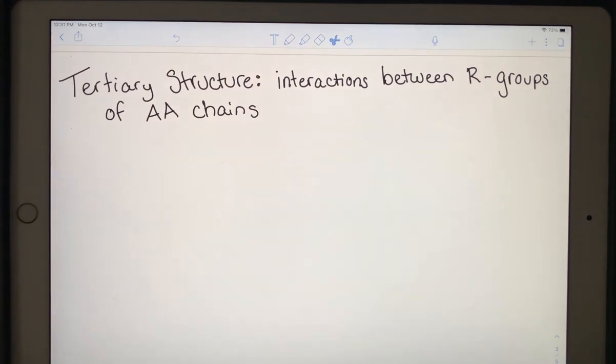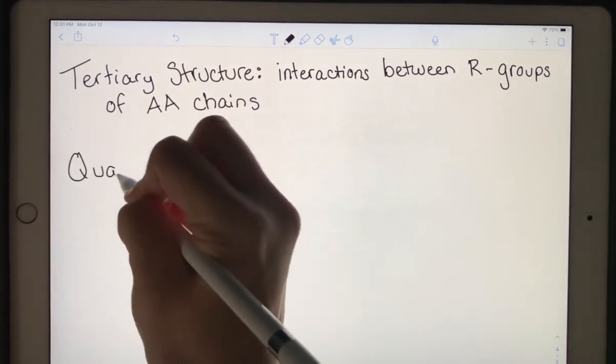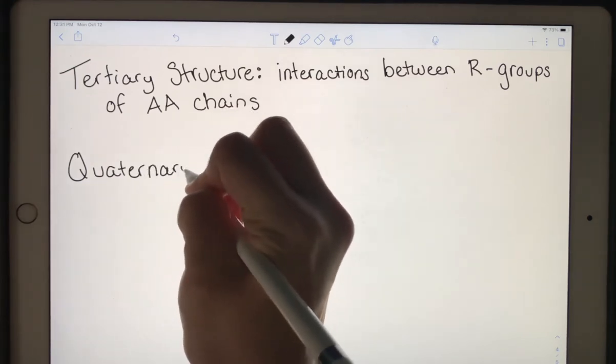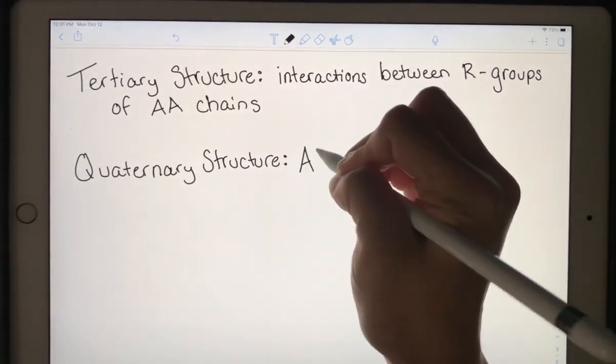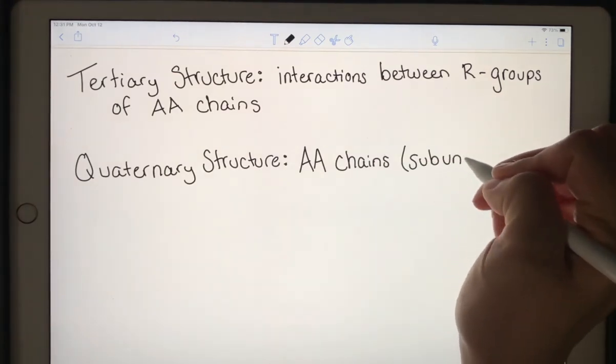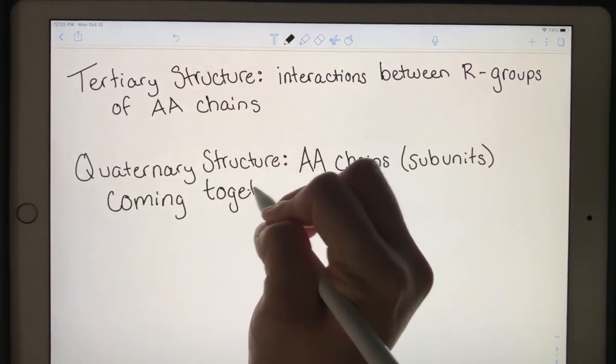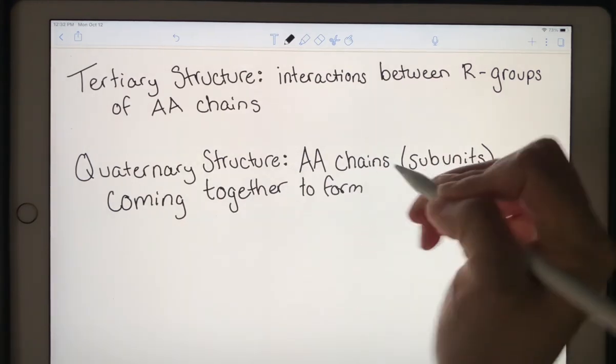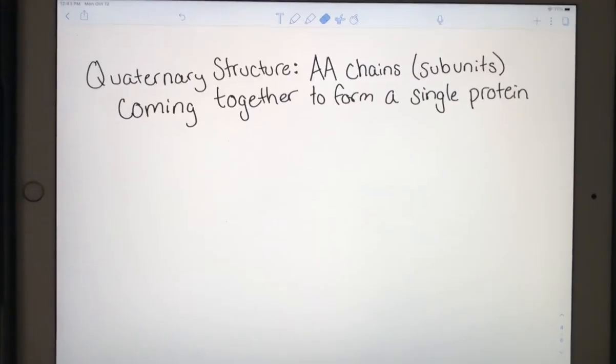The fourth level of structure has a fun name. It's called quaternary structure. With quaternary structure, you have amino acid chains called your subunits coming together to form a single protein.